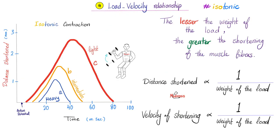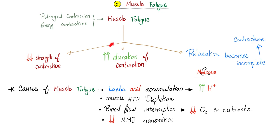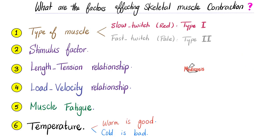Factor four: the load-velocity relationship — an inverse relationship. The lighter the load, the greater the shortening velocity and distance. The heavier the load, the lower the velocity and distance. That's why hypotension causes tachycardia — the other cause is the baroreceptor reflex. Muscles get tired due to: lactic acid accumulation, muscle ATP depletion, blood flow interruption, and decreased neuromuscular transmission.